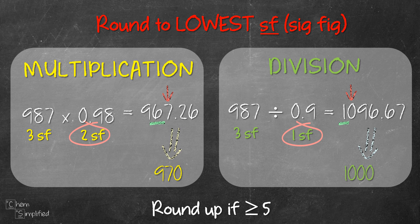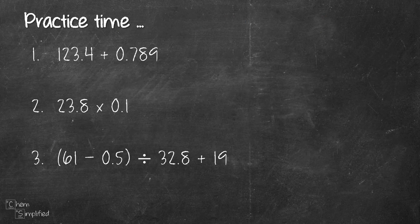So far we've gone through examples involving only single operations — purely multiplication, division, subtraction, or addition. If you encounter a question that has mixed operations, just follow the order of operations, keep track of the decimal place or sig fig for each step, and then round off at the very end. Don't round off at each step — keep all the digits and only round off at the very end. Let's try out a few questions. Feel free to pause the video while solving on your own first, and we'll go through them together when you're ready.